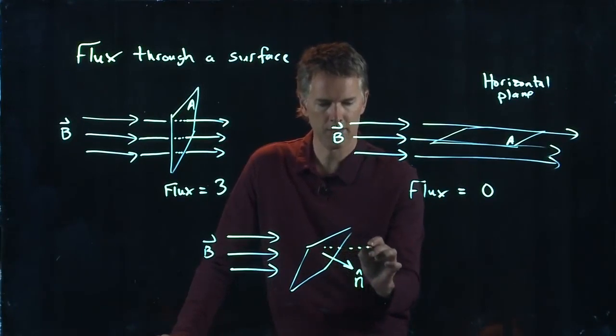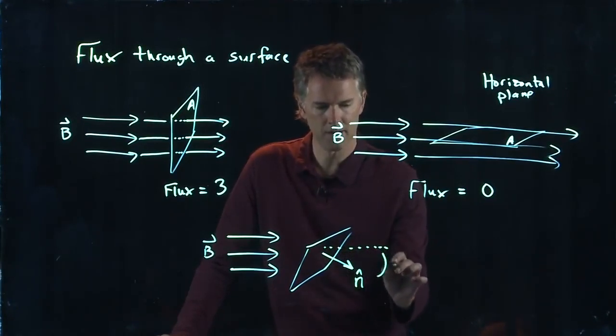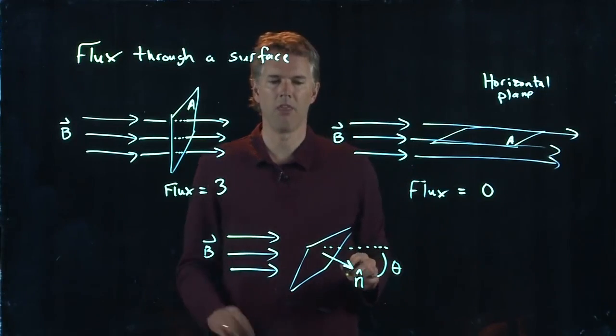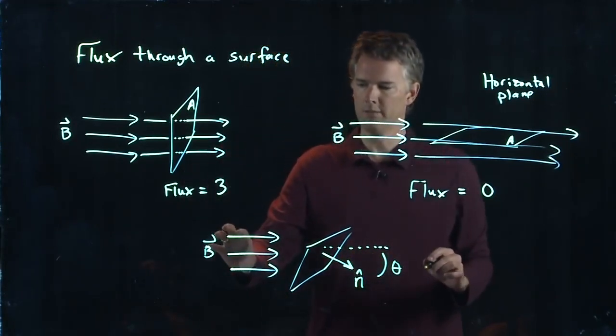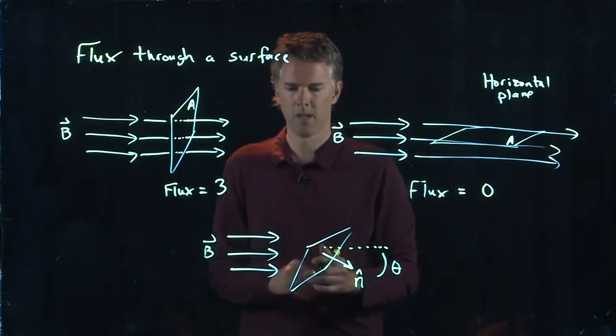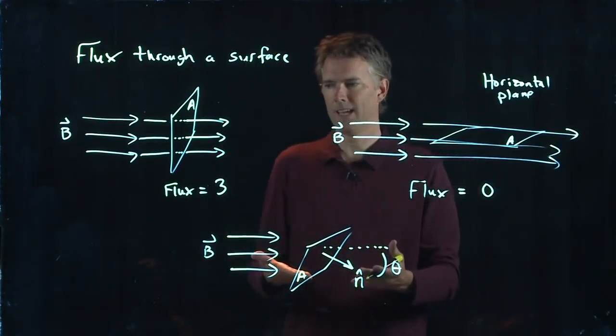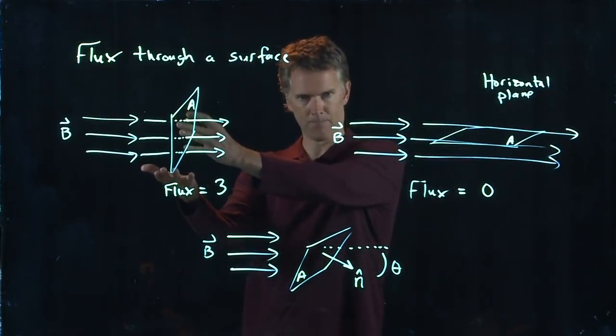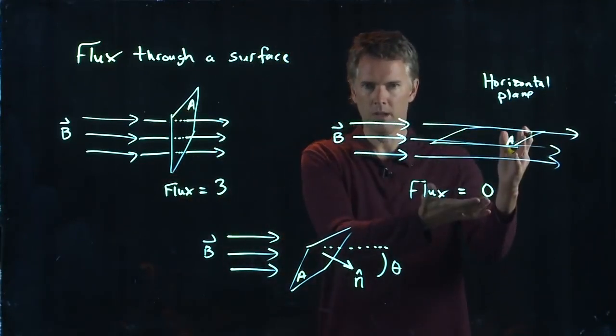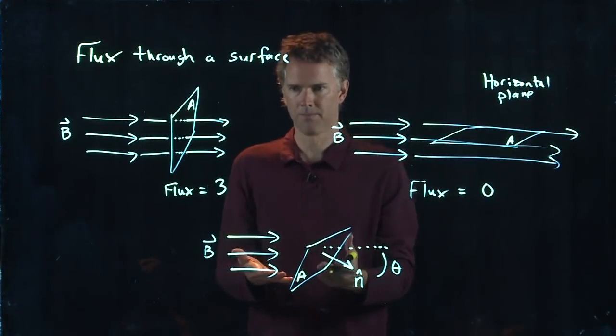And this is the surface normal to the area, n-hat. And let's say that this thing is tilted down at an angle theta relative to the horizontal. It's still area A. But now what is the flux? It's not the full three. It's not zero. It's something in between.